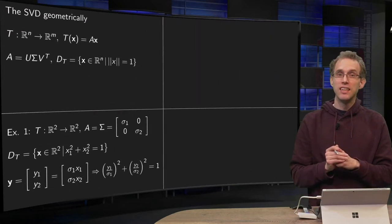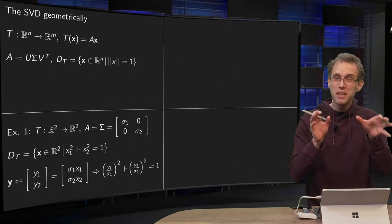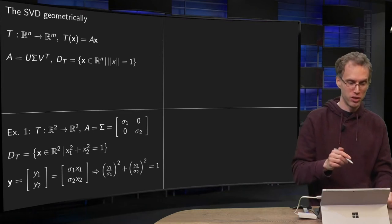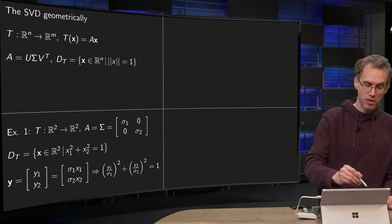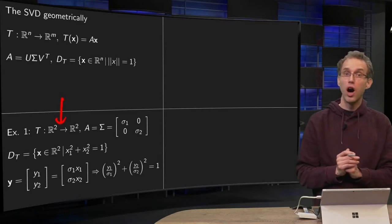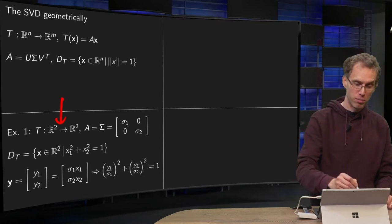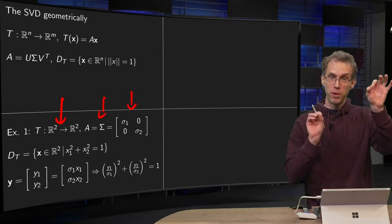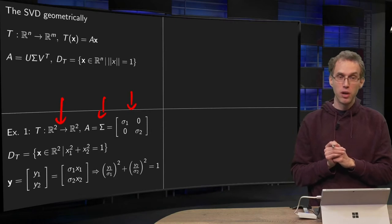In essence, as we will see, the sigma matrix is telling the whole story, so we will focus on the action of sigma matrices first, and start with an easy one. We go from R^2 to R^2, and we assume A is some sigma matrix with singular values sigma_1 and sigma_2. So what happens then?